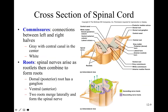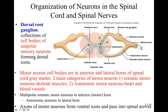The lateral horn contains cell bodies for autonomic motor neurons. For example, when you're watching a movie late at night and hear a bump, your heart rate increases involuntarily. That signal originates from cell bodies in the lateral horn, whose axons exit via the ventral root, eventually making contact with a second neuron to activate the heart.